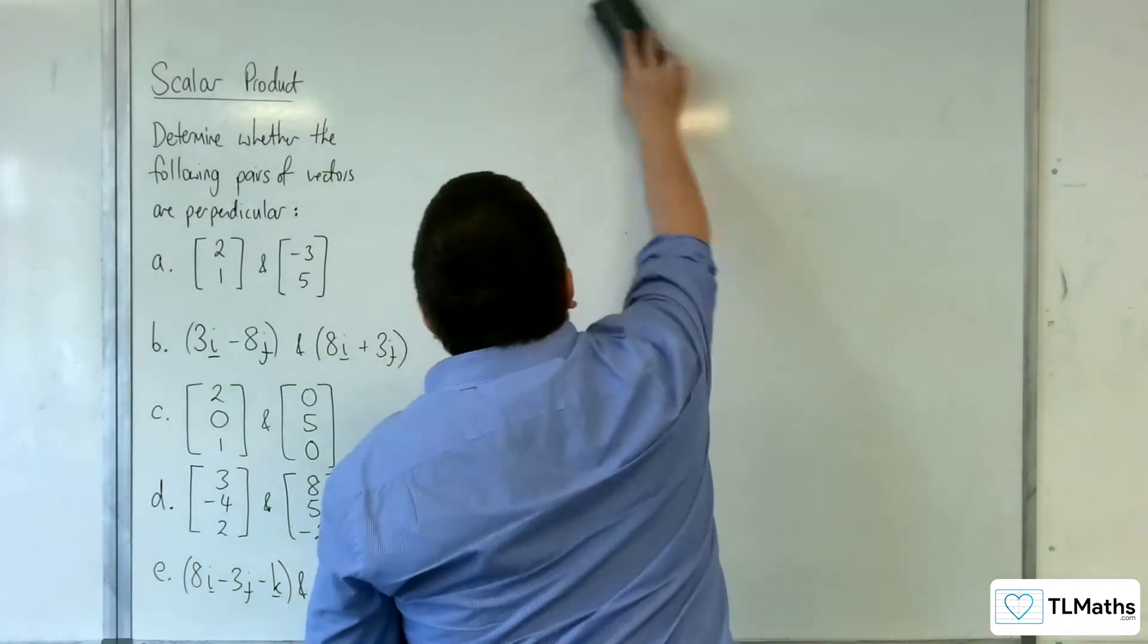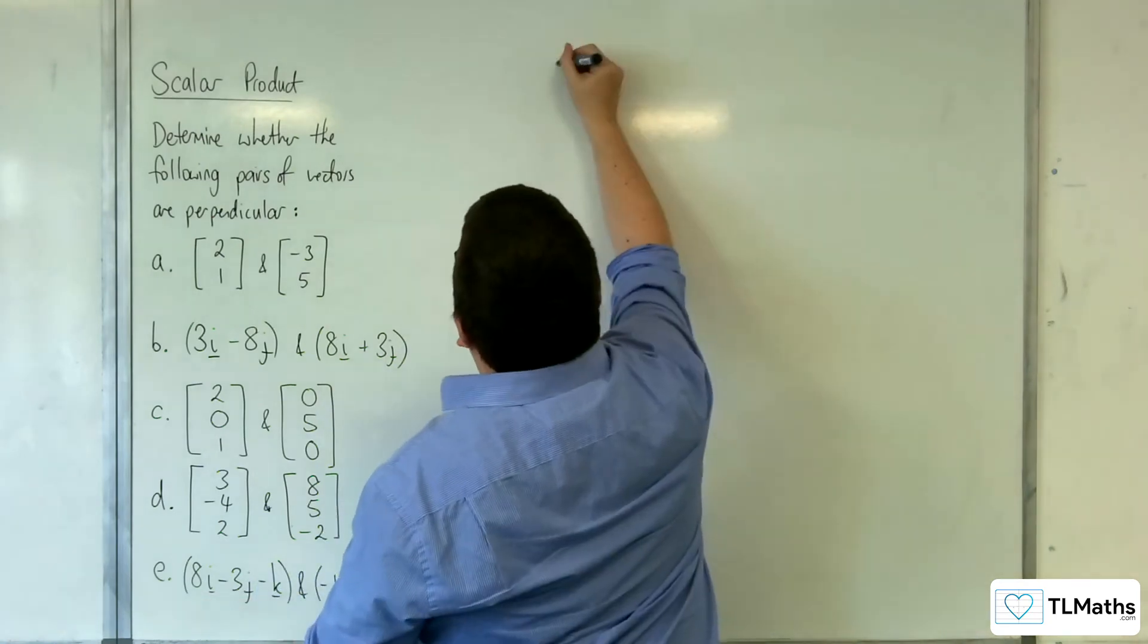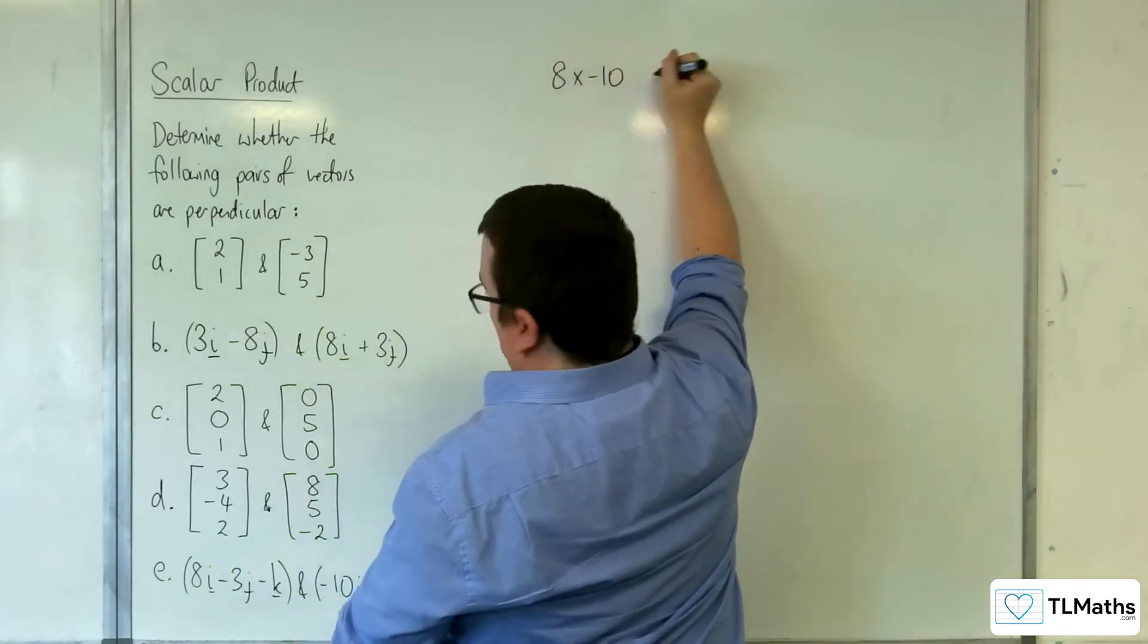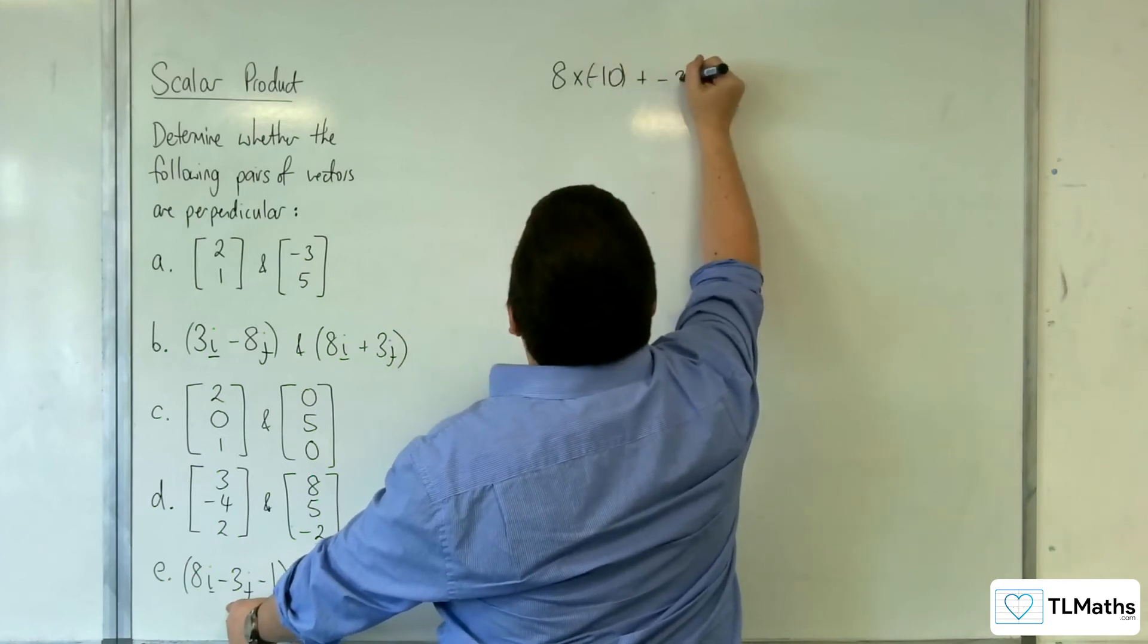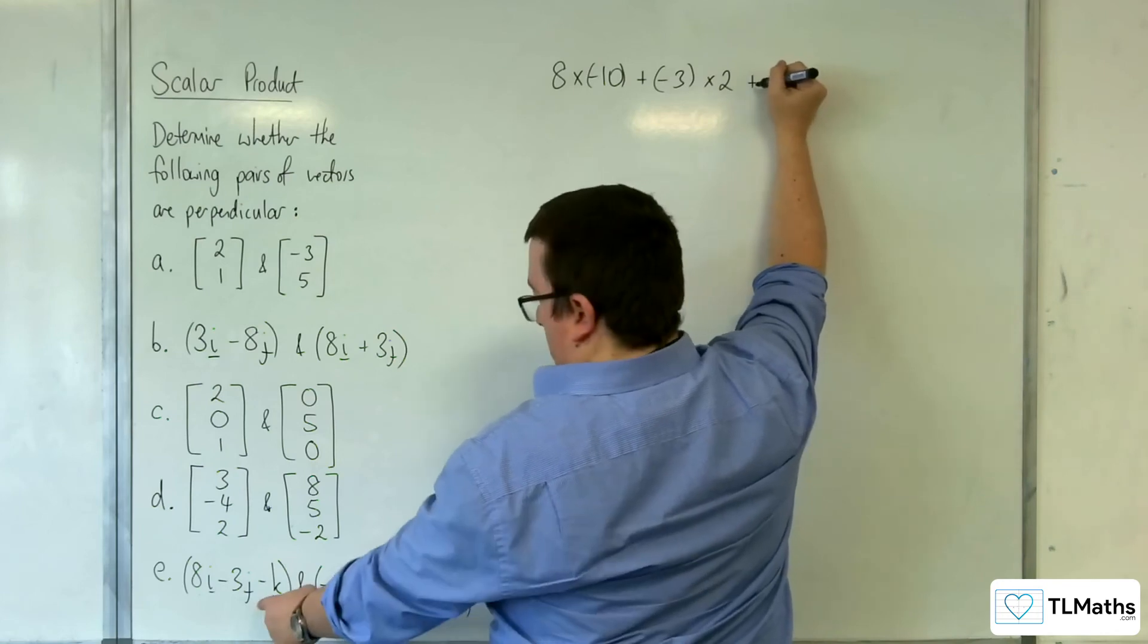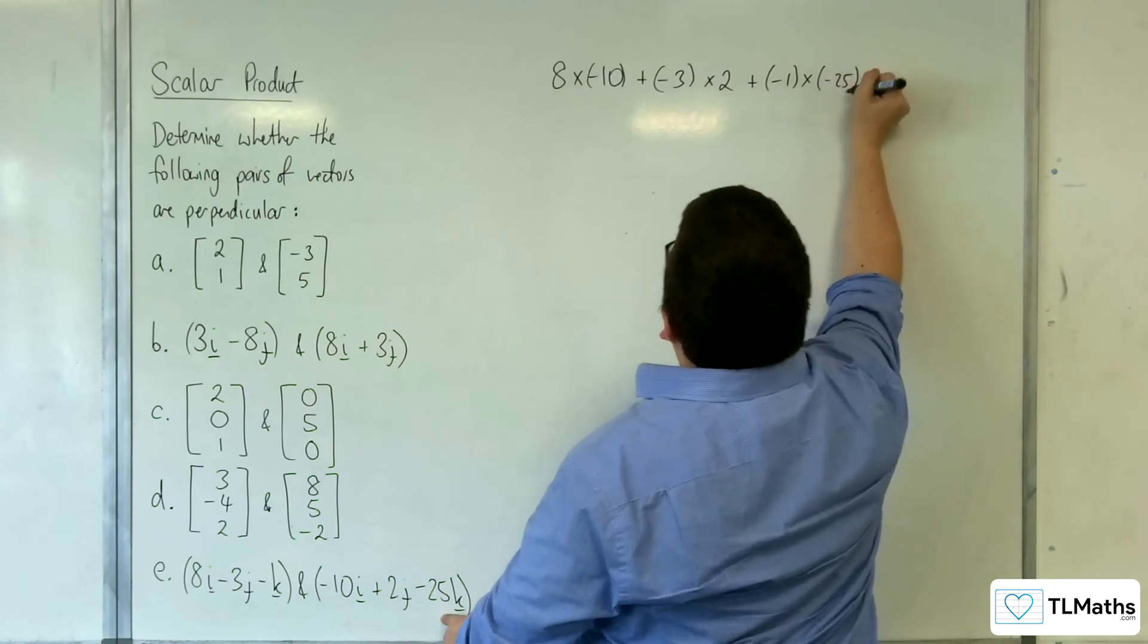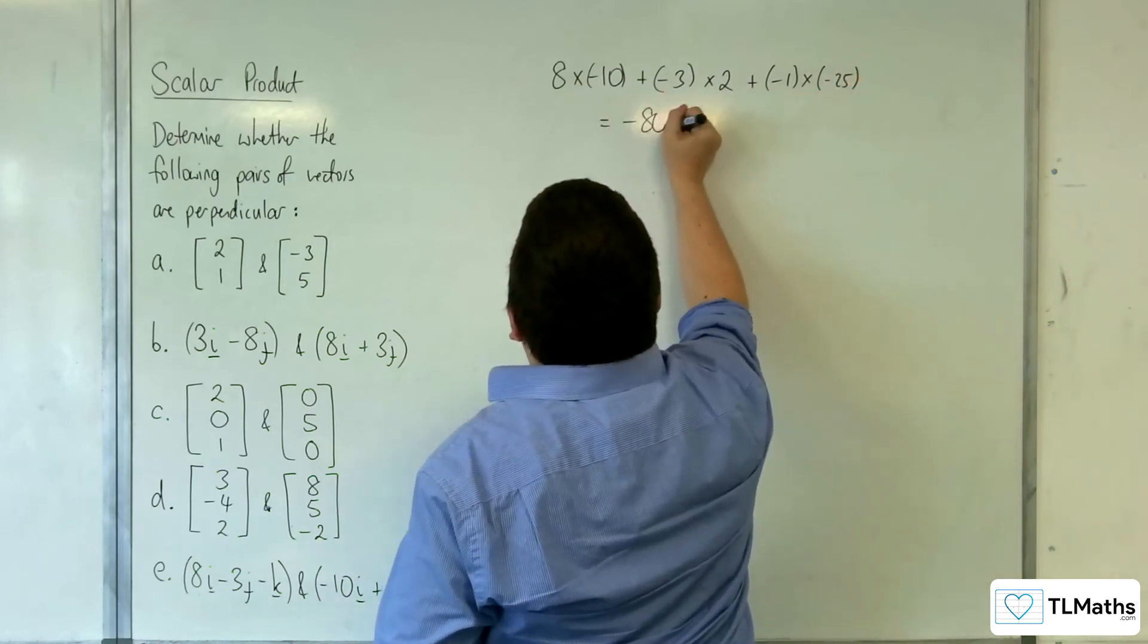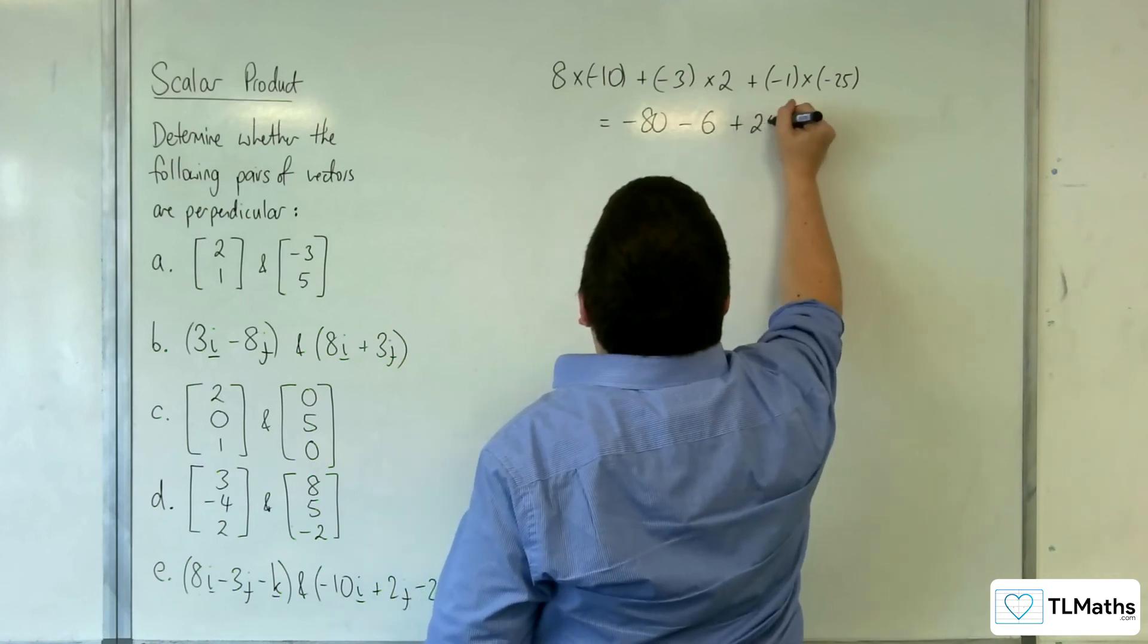And then finally, for E, we've got 8 times minus 10, and then we've got plus minus 3 times 2 plus minus 1 times minus 25. So we have minus 80 take away 6 plus 25.